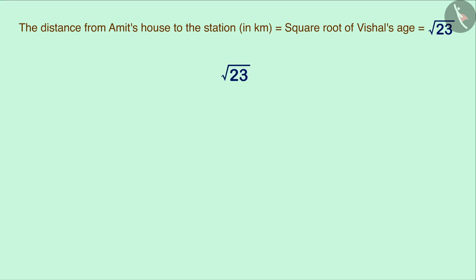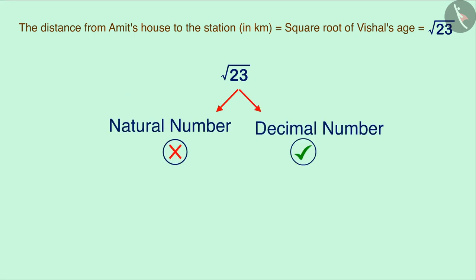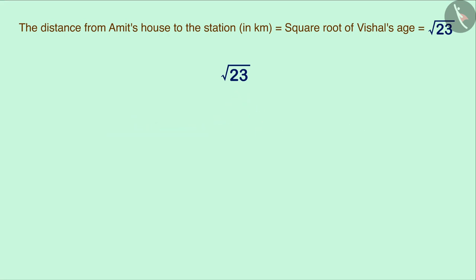Which means there are no natural numbers whose square is equal to 23. This means that the square root of 23 will not be a natural number but a decimal number which we can find out.